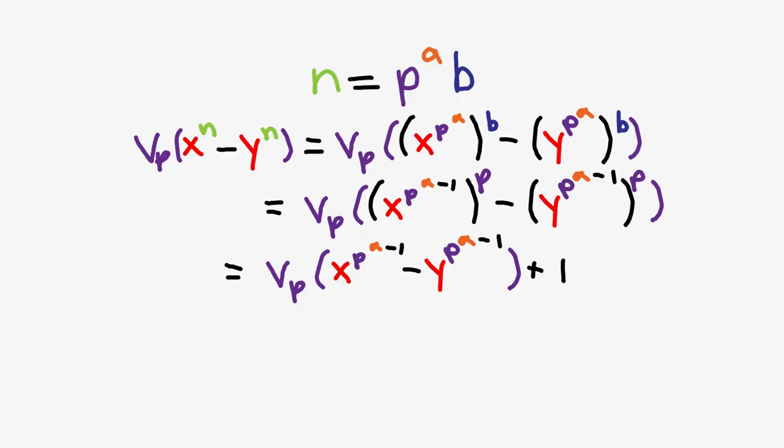If we keep pulling out exponents of p until we can't anymore, we get this. Since a is equivalent to v sub p of n, we are done.